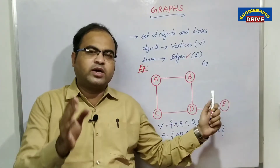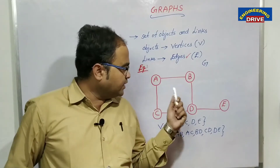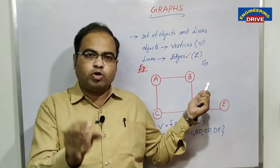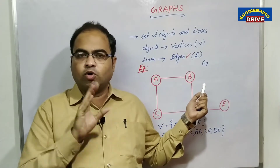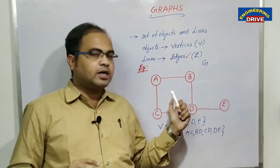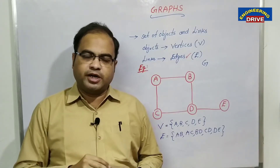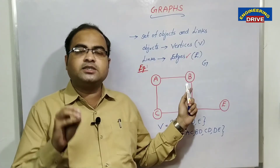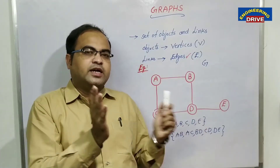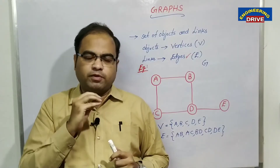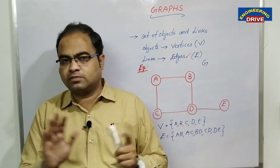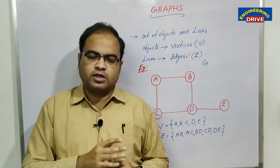Now, what is the difference between a graph and a tree? In trees, the circles are referred to as nodes — node A, node B, node C, and so on — and the connections are called links. But in graphs, we call them vertices and edges. This is one physical difference in terminology: graphs use vertices and edges, whereas trees use nodes and links.